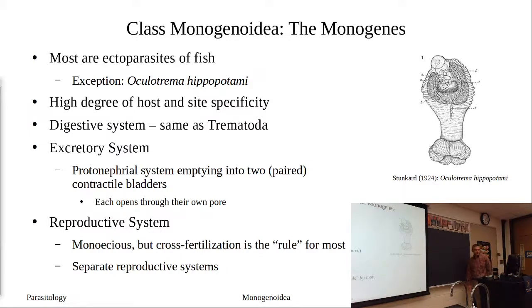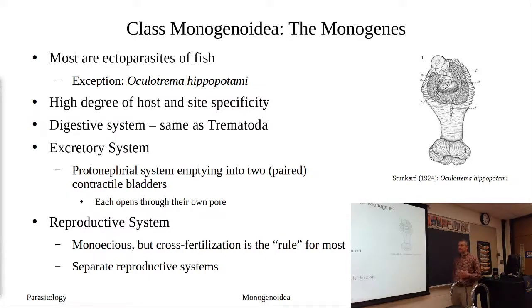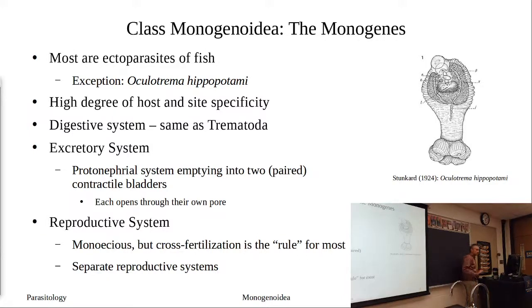The excretory system is a bit more developed — still a nephridial flame bulb system. However, since these guys are external, they have to deal with fresh water constantly. Instead of a single or paired system, they have two excretory bladders, each with their own excretory pore, so you're draining the right side and the left side separately. The reproductive system is monoecious — male and female in the same worm.